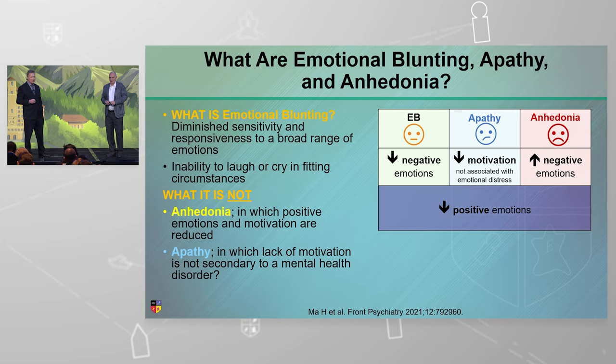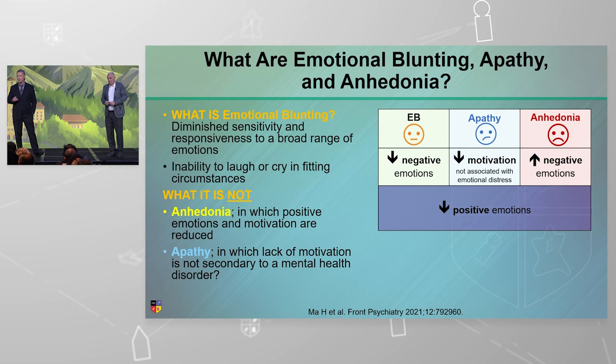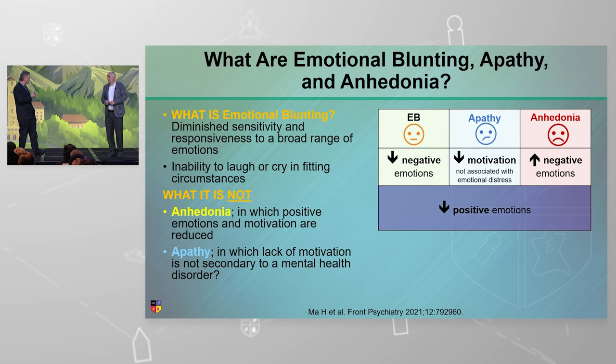But if you look upwards from positive emotion, there are differences. Emotional blunting I always see as diminished reactivity — not just positive, but less reaction to negative as well. And apathy, which is often described more in the world of neurology for some reason, is a decrease in motivation which involves aspects of reward and cognition.